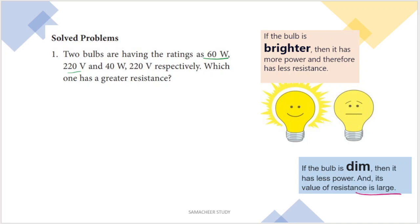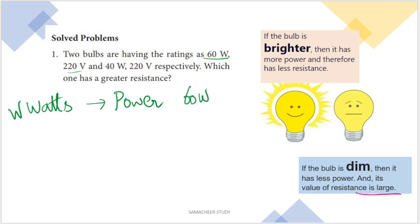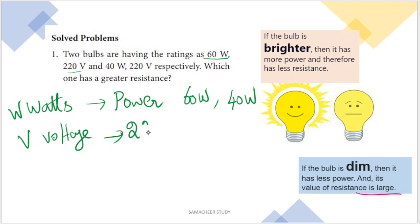In the question, we are given 60 watts. W is the symbol for watts, and watts represents power. So power for the first bulb is 60 watts and the second is 40 watts. V represents voltage. One bulb is 220 volts and the other bulb is also 220 volts — both have identical voltage.